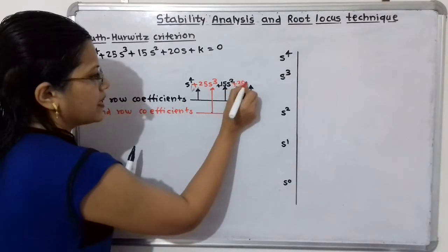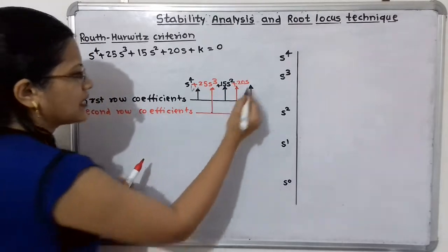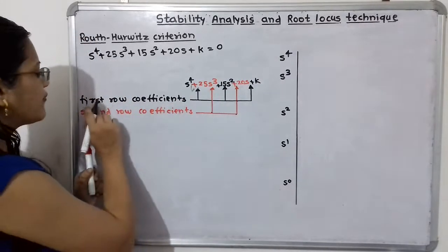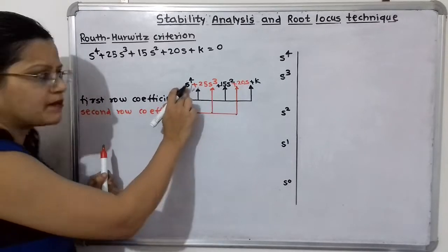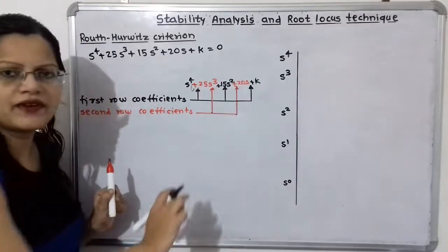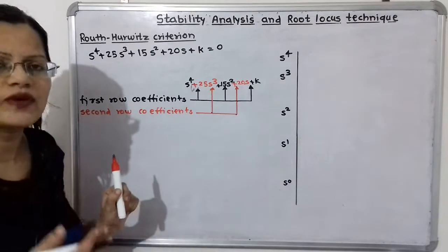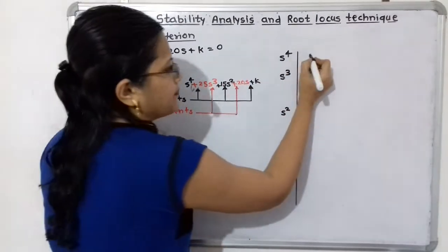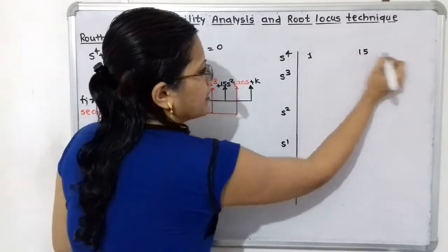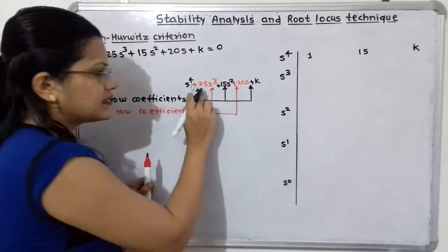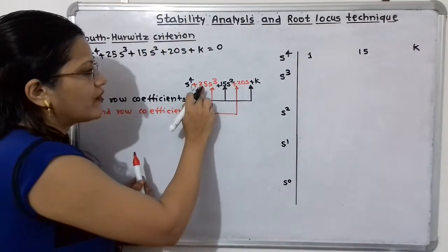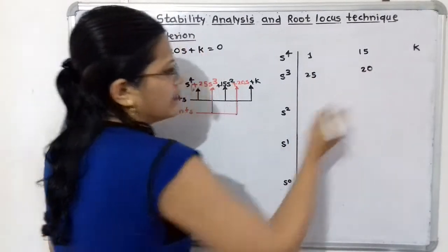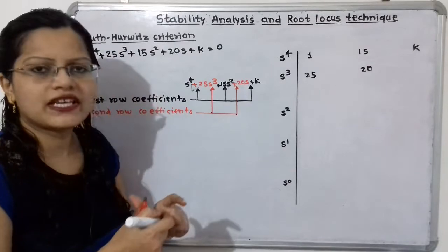The next numbers are 15S squared, plus 20S, plus K. So here the last one is K. Now, for the first row coefficients we take alternate numbers: the first, third, and fifth — that is 1, 15, K. For the second row, we take the alternate numbers 25 and 20.